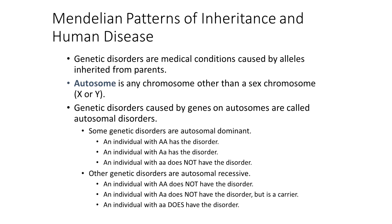Genetic disorders are medical conditions caused by alleles that are inherited from our parents. Anything called autosomal — an autosomal disorder — means that it's on a chromosome that is not a sex chromosome, so it is not associated with the X or Y chromosomes. You have 23 pairs of chromosomes in your body for a total of 46. One pair are sex chromosomes, either XX or XY, and the other 22 pairs, or 44, are autosomes. They deal with everything else in your body.